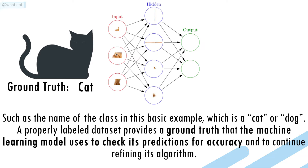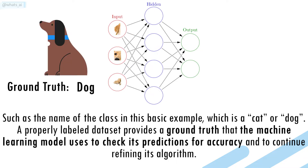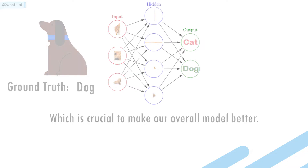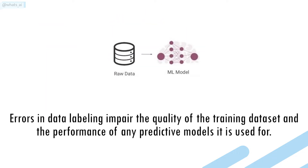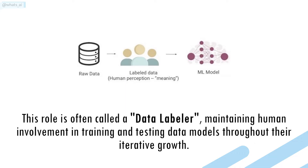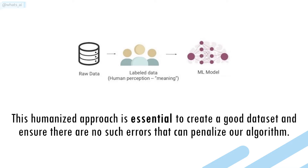A properly labeled dataset provides a ground truth that the machine learning model uses to check its predictions for accuracy and to continue refining its algorithm, which is crucial to make our overall model better. Errors in data labeling impair the quality of the training dataset and the performance of any predictive models it is used for. To mitigate this, many companies such as Keymaker take a human-in-the-loop approach. This role is often called a data labeler, maintaining human involvement in training and testing data models throughout their iterative growth.